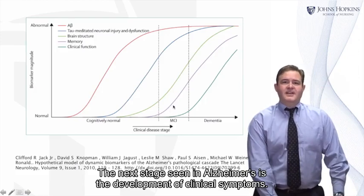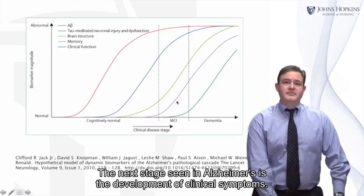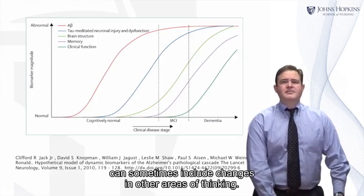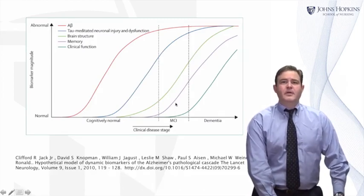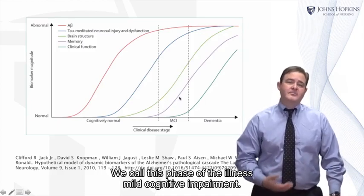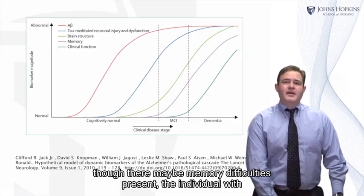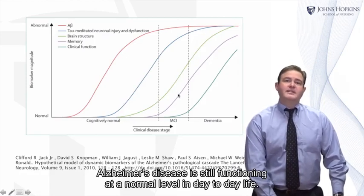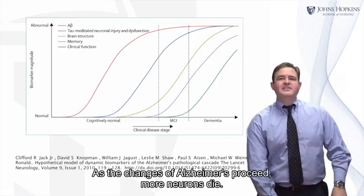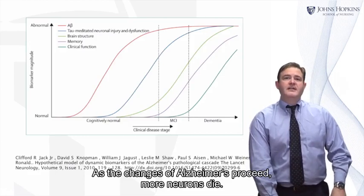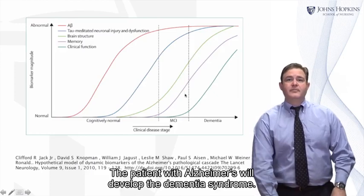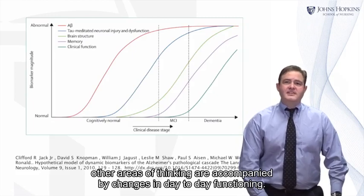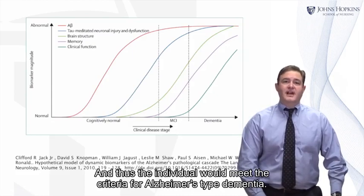The next stage seen in Alzheimer's is the development of clinical symptoms. These first symptoms are generally changes in memory, but can sometimes include changes in other areas of thinking. We call this phase mild cognitive impairment, because though there may be memory difficulties present, the individual with Alzheimer's disease is still functioning at a normal level in day-to-day life. As the changes of Alzheimer's proceed and more neurons die, the patient will develop the dementia syndrome. At this point, the changes in memory and other areas of thinking are accompanied by changes in day-to-day functioning, and thus the individual would meet the criteria for Alzheimer's type dementia.